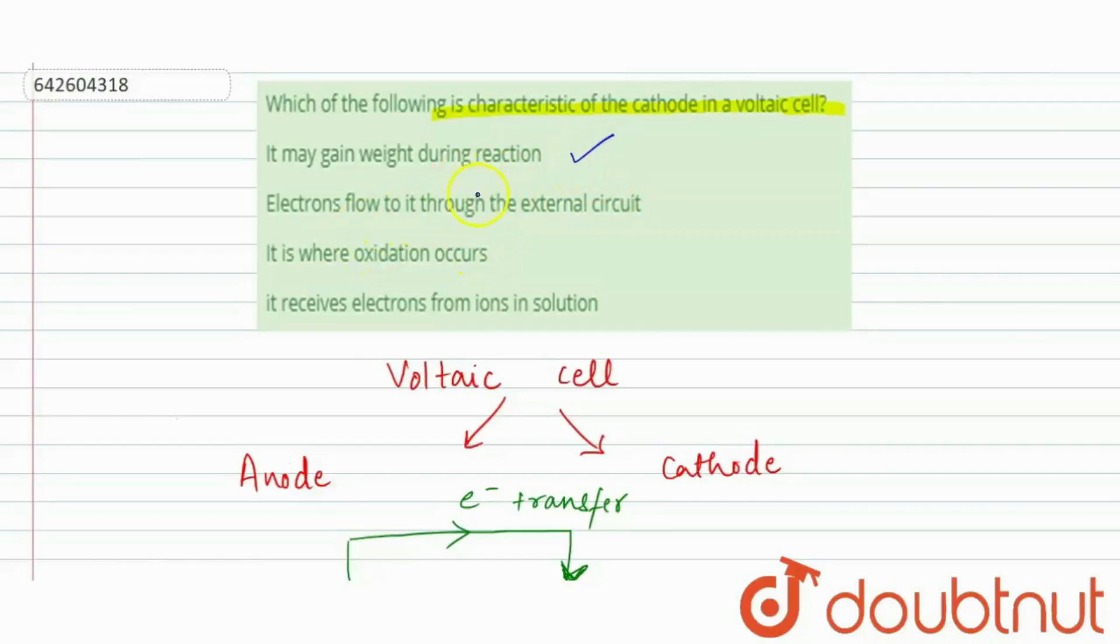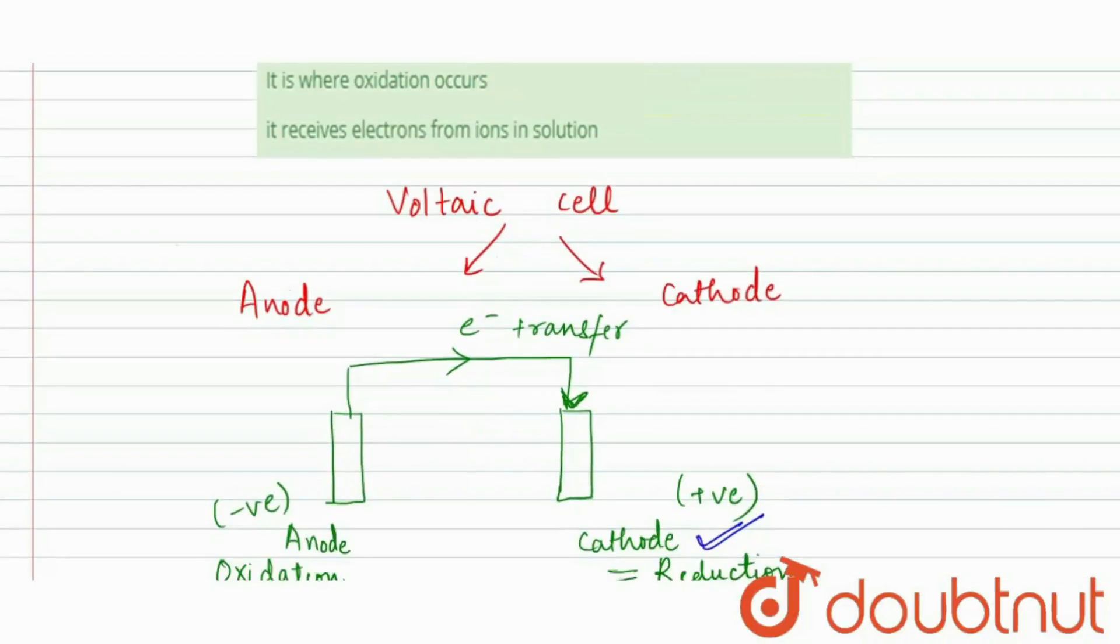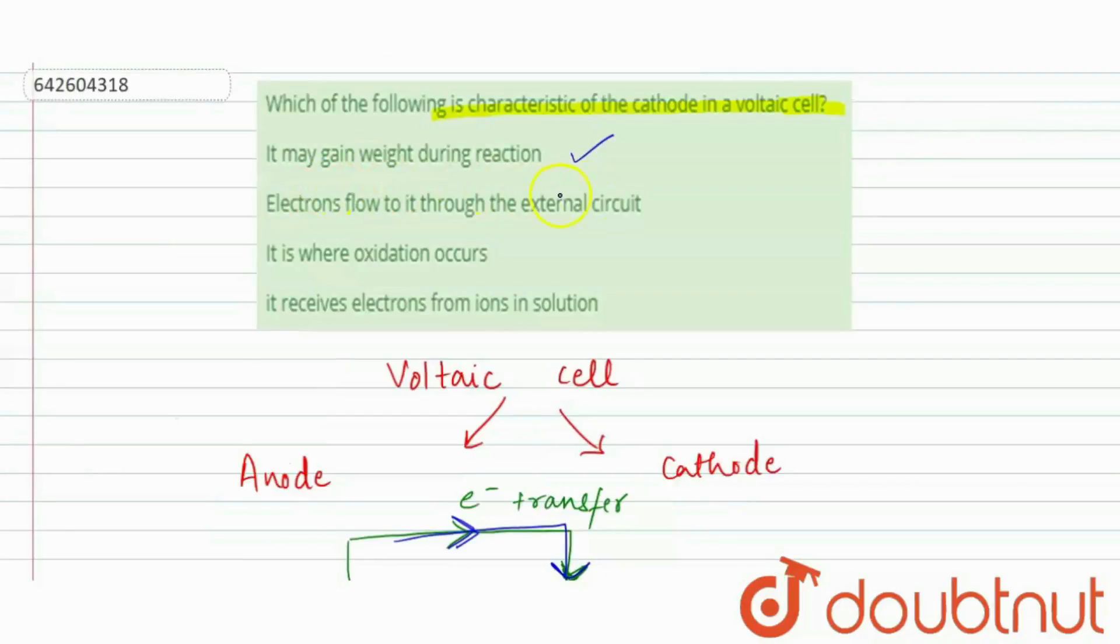Second is, electrons flow to it through the external circuit. So if we see this structure or diagram, here we can see that electrons are flowing from the external circuit, from anode to cathode. So this is also our correct statement.